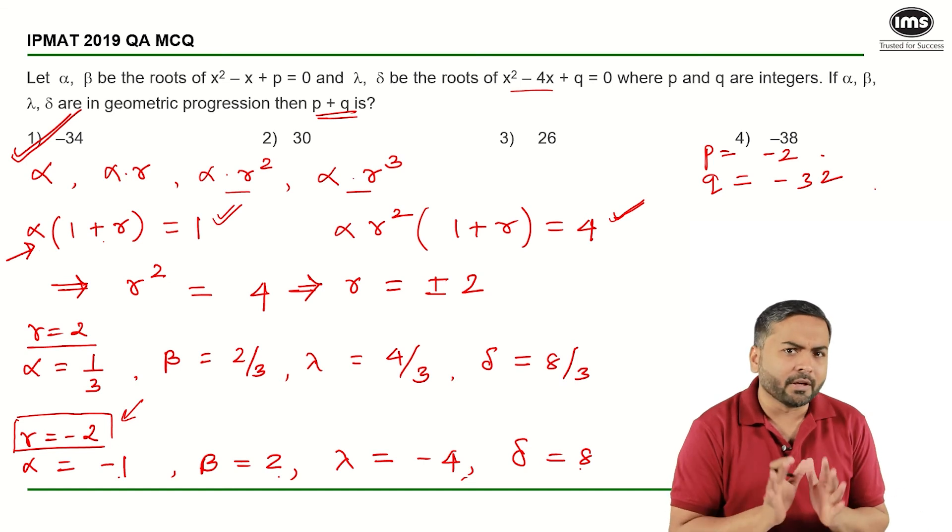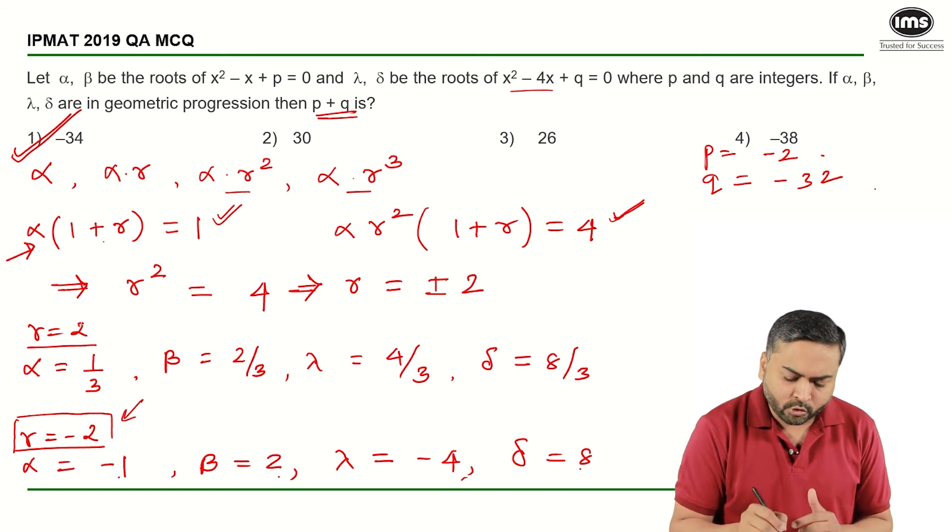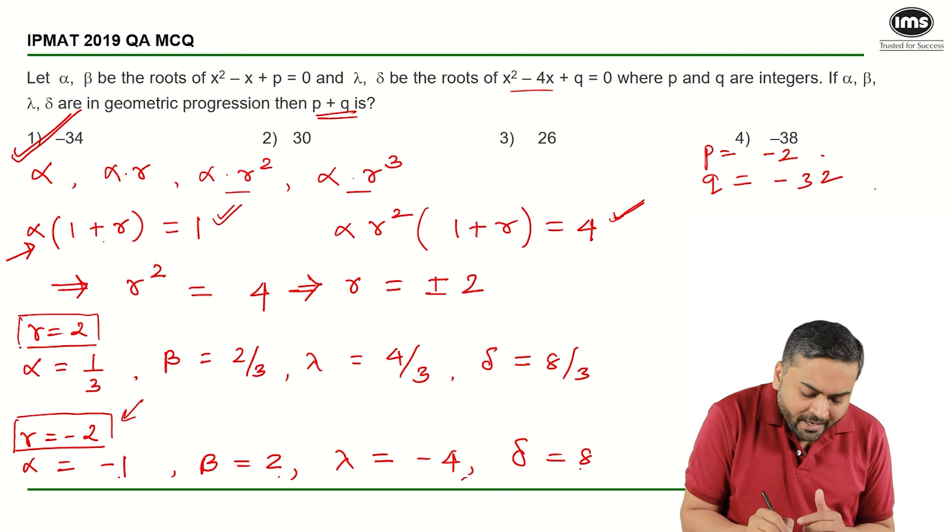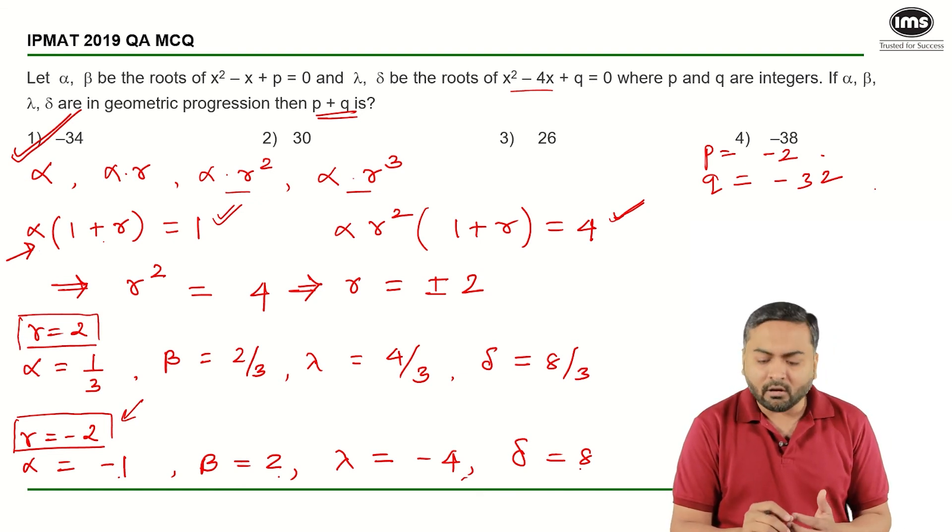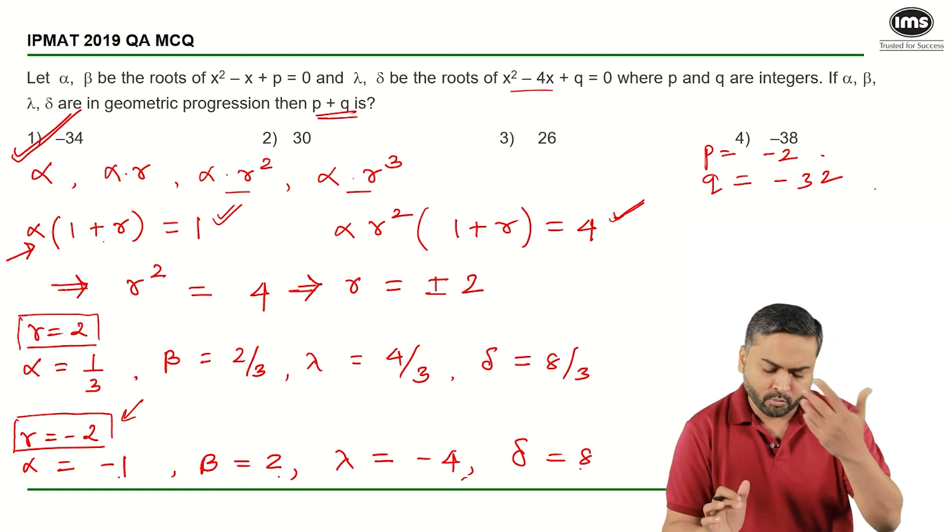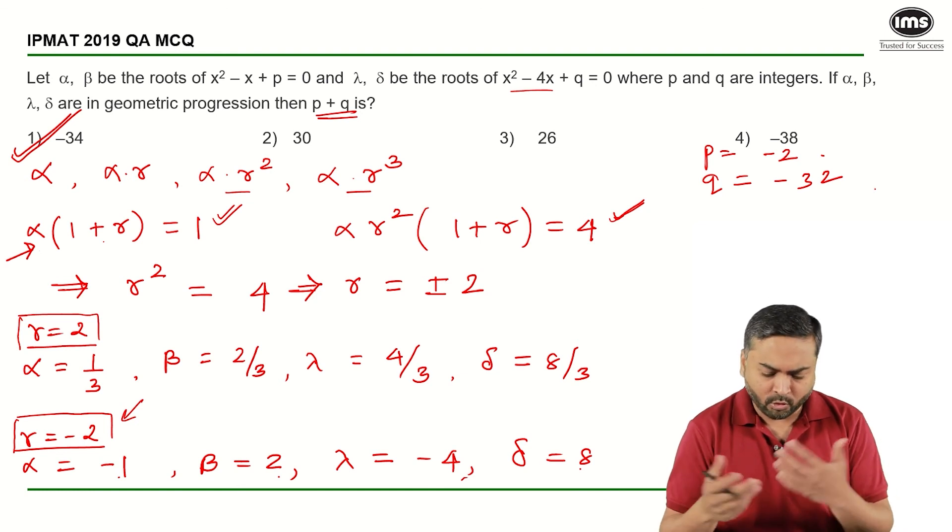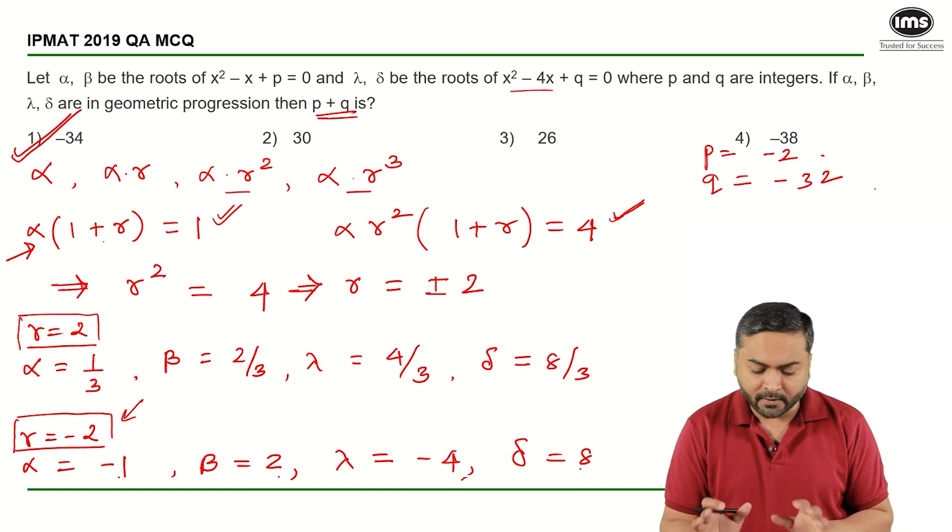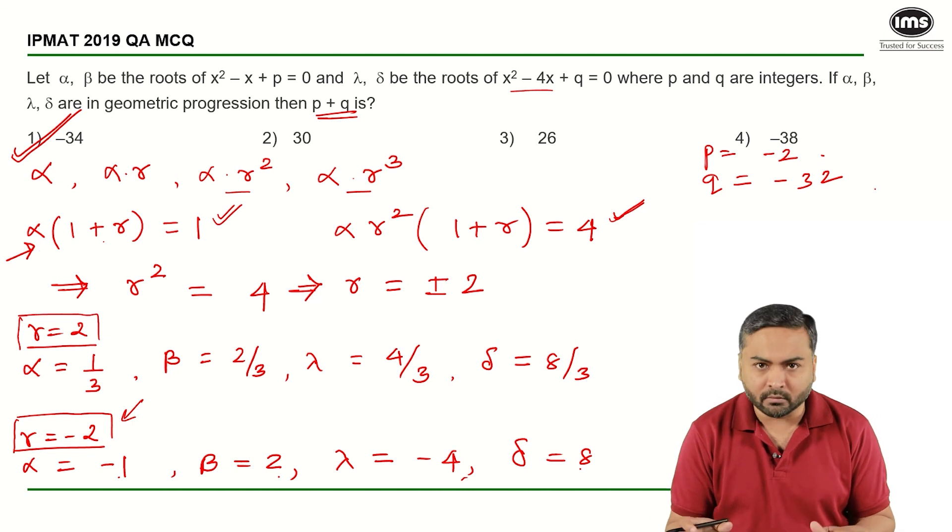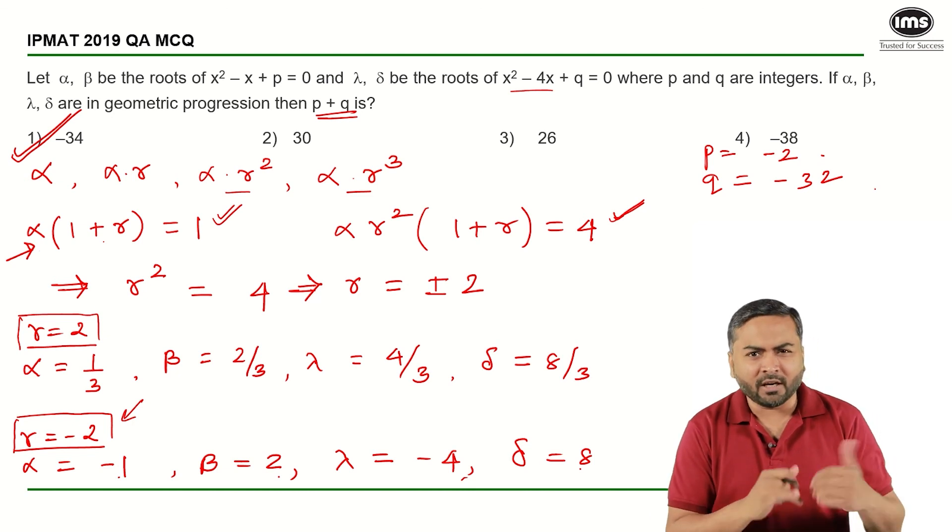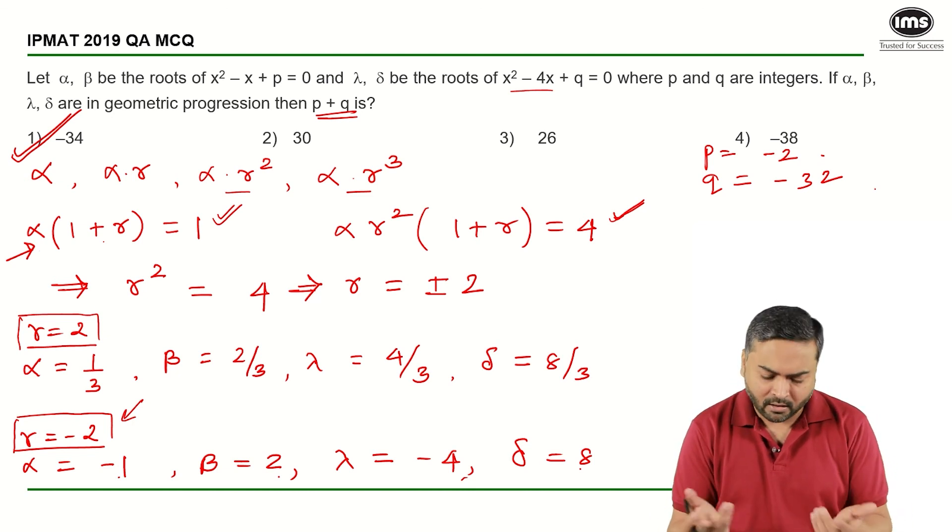There is a possibility that even if you start with R is equal to 2, you may end up getting an integral value if the numerator can be cancelled with the denominator. That is very much possible, but it is obvious to start with an integral value because the options are given like that.